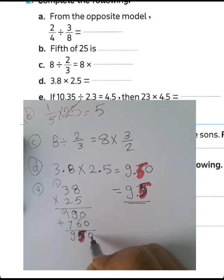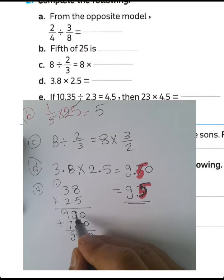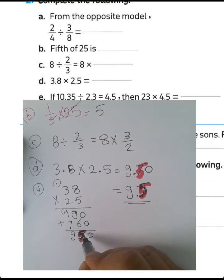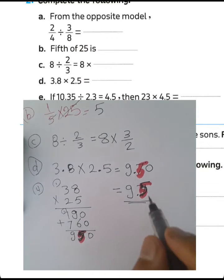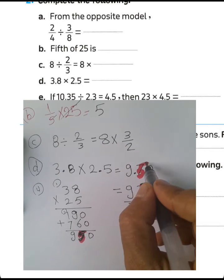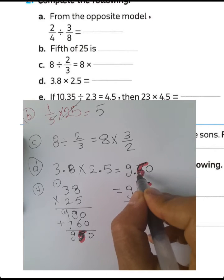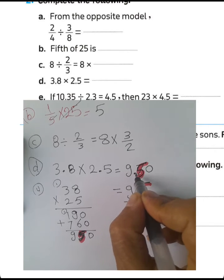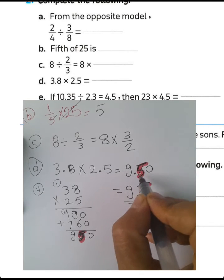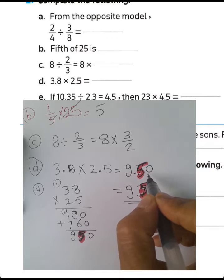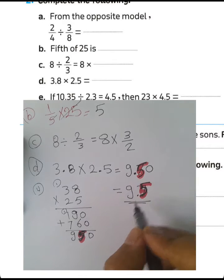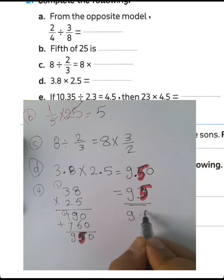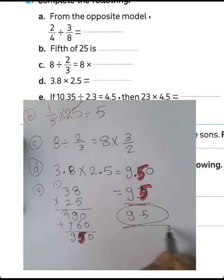Correcting the addition: 9 plus 6 equals 15 — write 5, carry 1. Then 2 plus 7 equals 9, plus 1 equals... the result here is 9.5. Place the decimal point after two places — the result is 9.5.